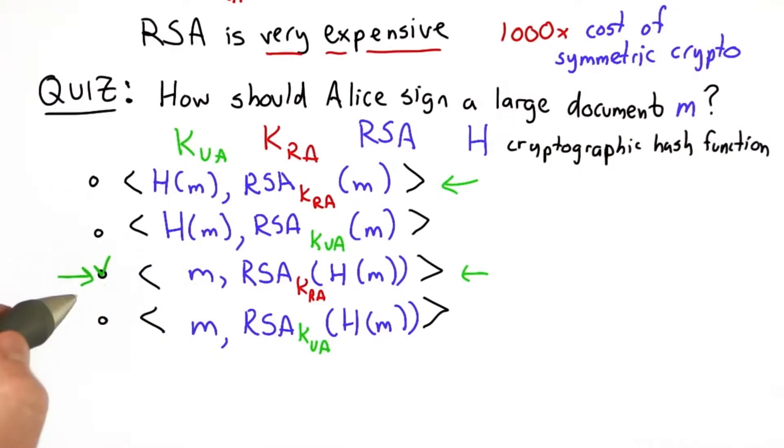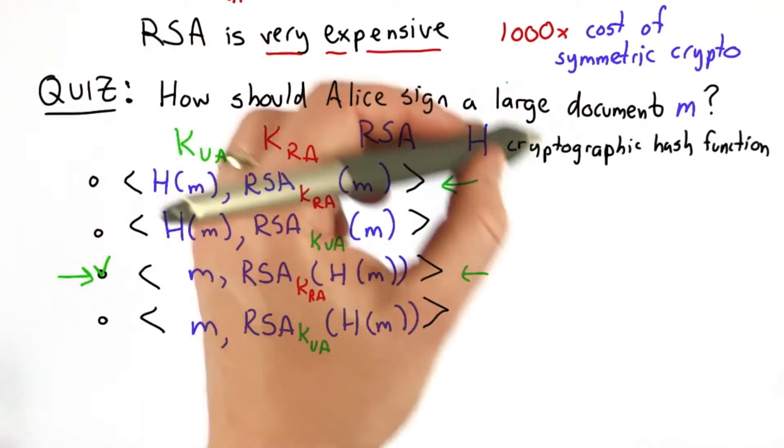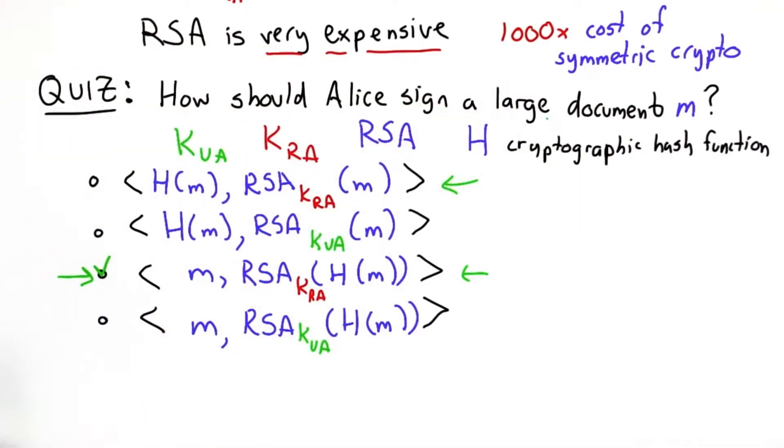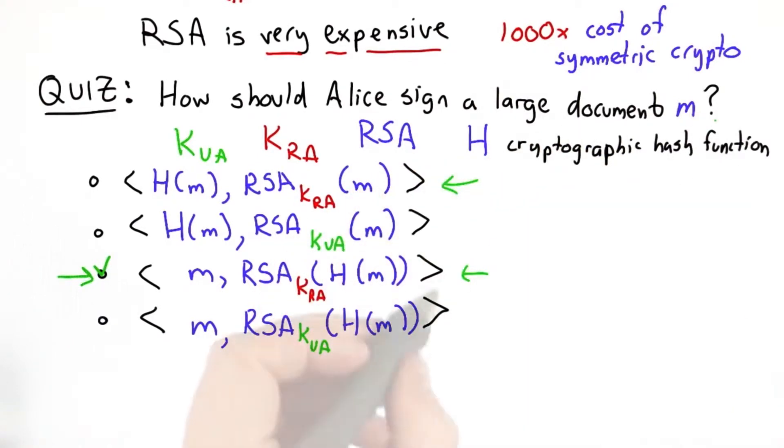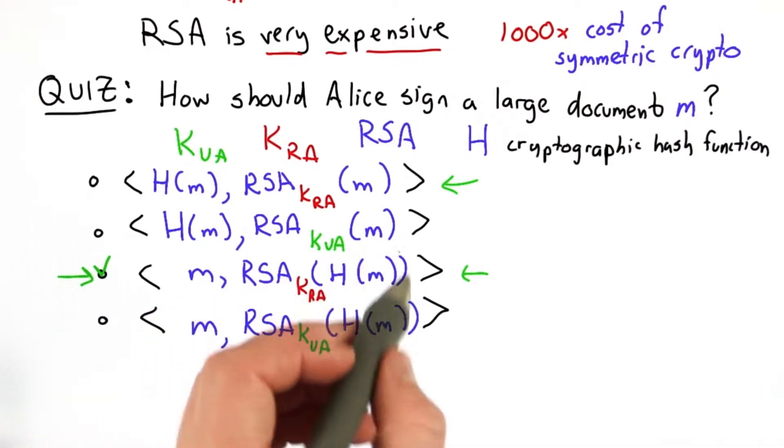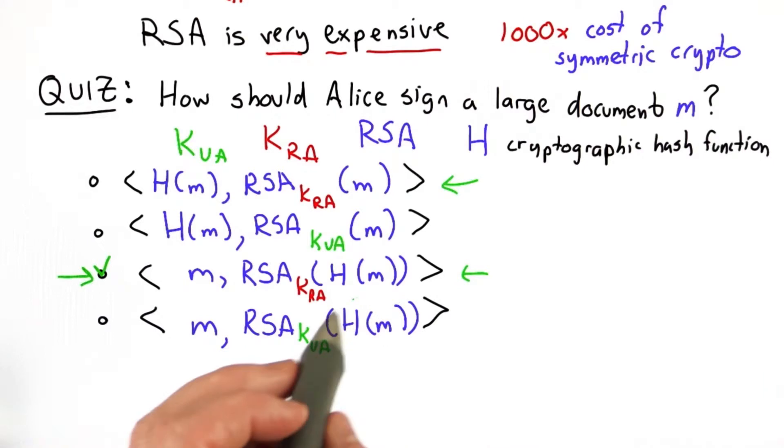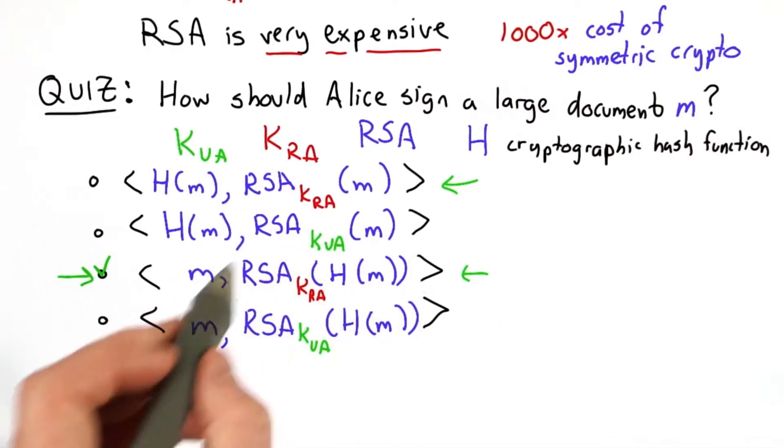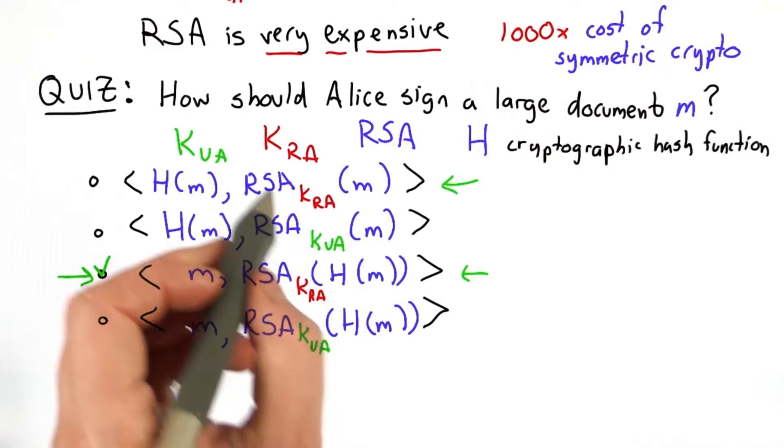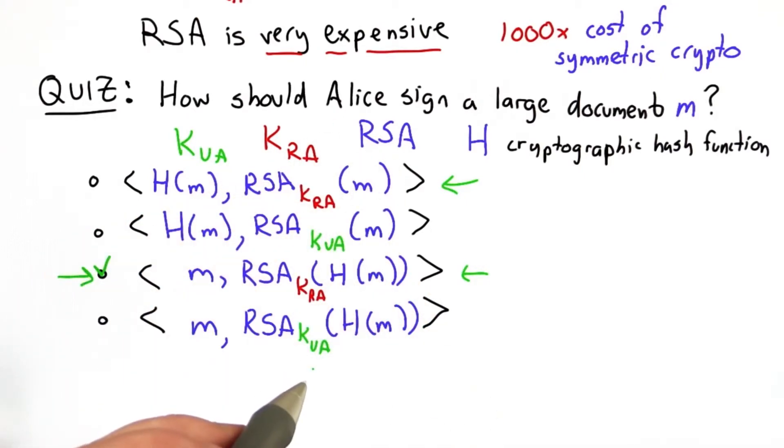Then we have a choice which one of these two is better. If we believe we can have one-way hash functions that have the collision-resistance properties that we talked about, then this is much better because the output of the hash function is a small fixed-size value. For a given security level, it might be 256 bits, and we can encrypt that much more cheaply than if we had to encrypt the whole document using RSA. So that's why this is the best choice.